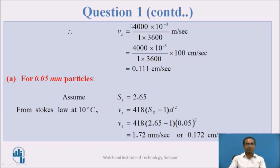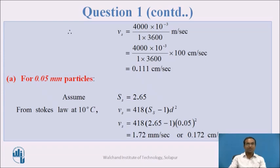By putting Q and A into the formula Vs equals Q by A, we get 4000 multiplied by 10 to the power minus 3, divided by 1 meter square multiplied by 3600 seconds. Converting to centimeter per second by multiplying by 100, we finally get Vs equal to 0.111 centimeter per second. This is the given Vs, calculated from the overflow rate.